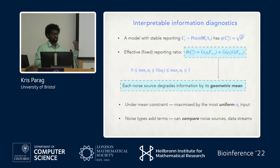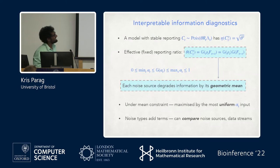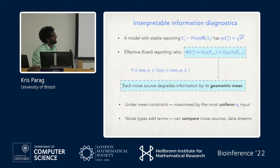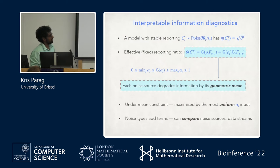For interpretability, we imagine an equivalent model with just a sampling fraction theta and equate the two. The result is that the relative information in cases versus true infections is a product of geometric means: the geometric mean of all reporting rates across time, and the geometric mean of the cumulative delay probabilities. Each noise source we add tends to contribute another geometric mean term, giving us a heuristic that each noise source's quality is determined by its geometric mean.